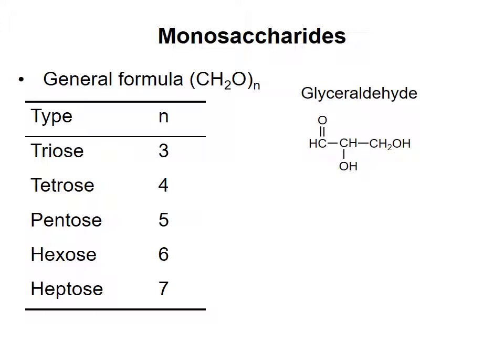The triose glyceraldehyde is a simple example of a monosaccharide. As for all monosaccharides, one carbon is doubly bonded to an oxygen atom — this is known as a carbonyl group. Each other carbon is attached to a hydroxyl group, also known as an alcohol. In glyceraldehyde, the carbonyl is on the end of the carbon chain, so it is called an aldehyde group. Therefore glyceraldehyde is referred to as an aldose.